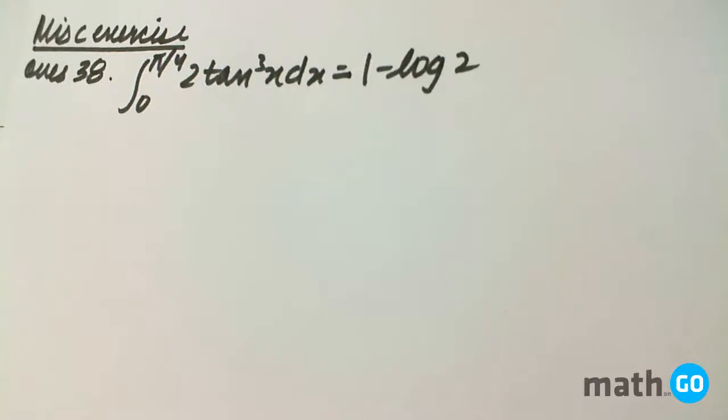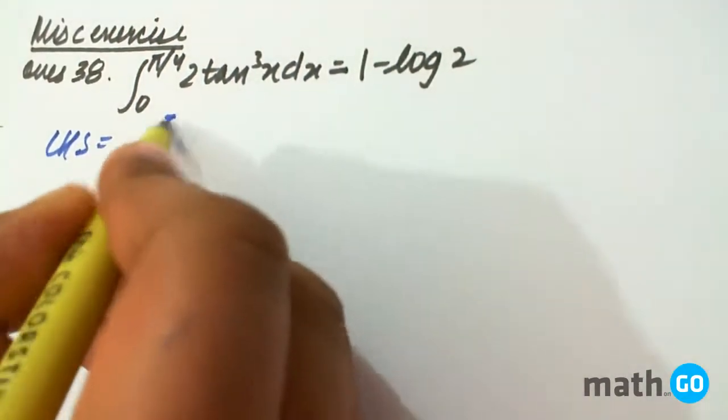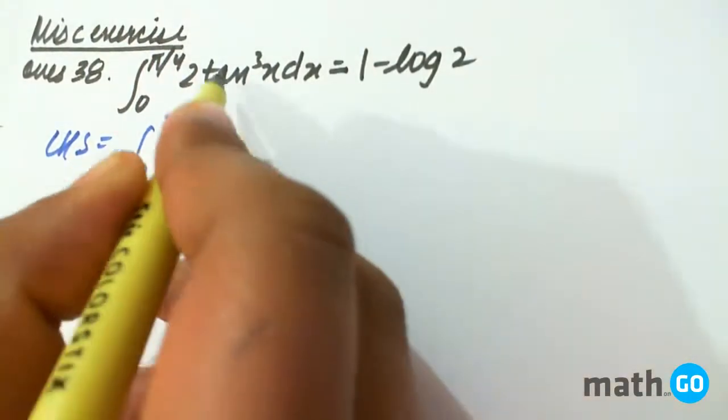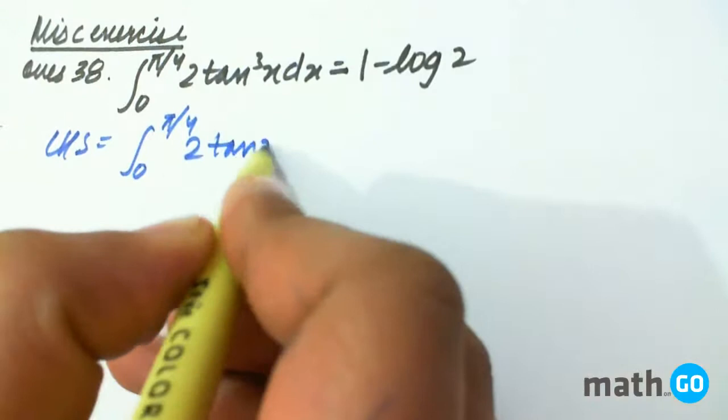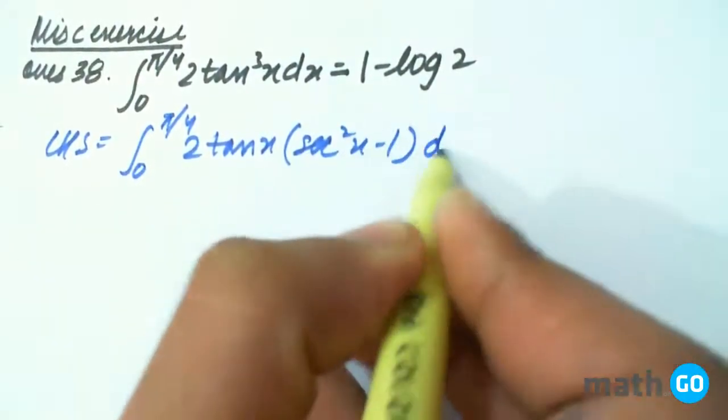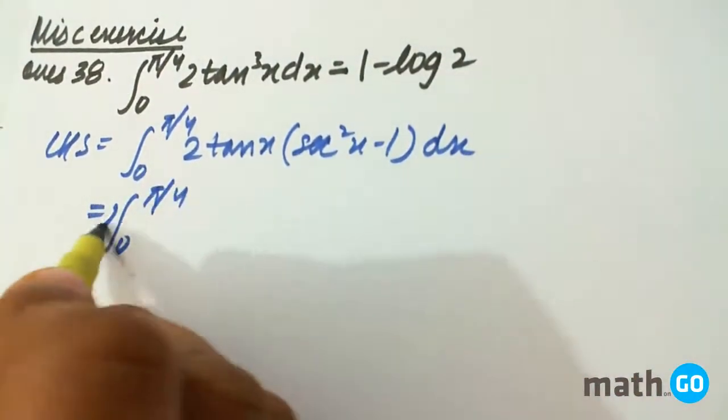Selenius exercise question number 38, we have to prove this. We will take LHS, that is equal to integral from 0 to π/4. It can be written as tan²x into tan x, so tan x into tan²x. Tan²x is sec²x minus 1 dx, so it will be like 2.